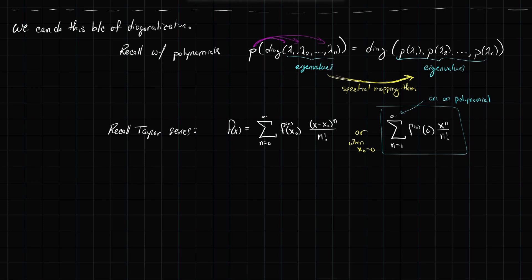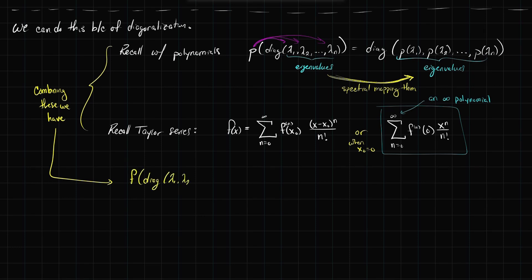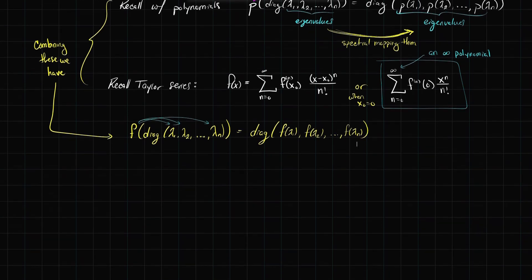Combining these two ideas, we have that any function of a diagonal matrix diag(lambda_1, lambda_2, ..., lambda_n) can pass over to the entries of the diagonal, and you end up with exactly the diagonal of f(lambda_1), f(lambda_2), ..., f(lambda_n). So we're just evaluating f along the diagonals. This could be listed as its own definition of a matrix function, but it's only a matrix function on diagonal matrices.